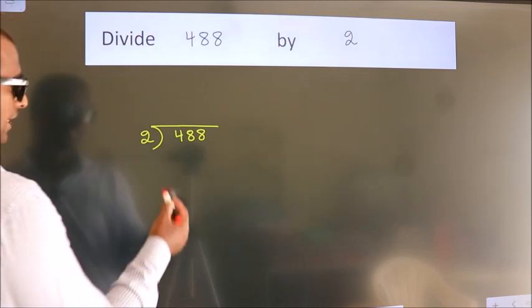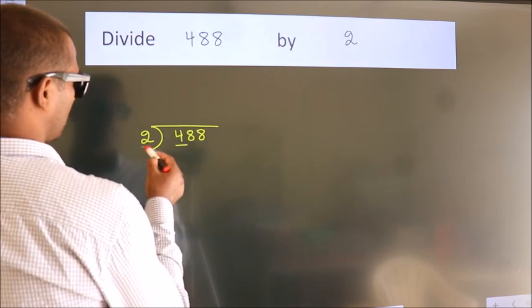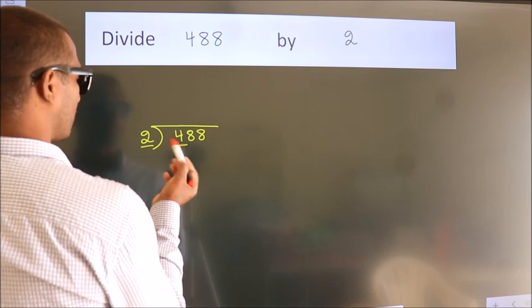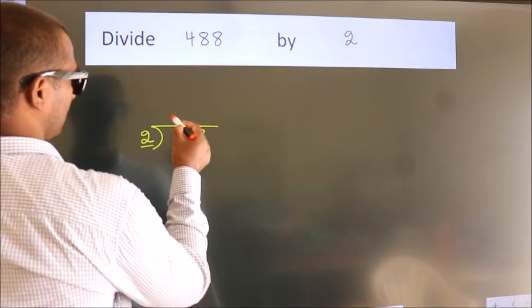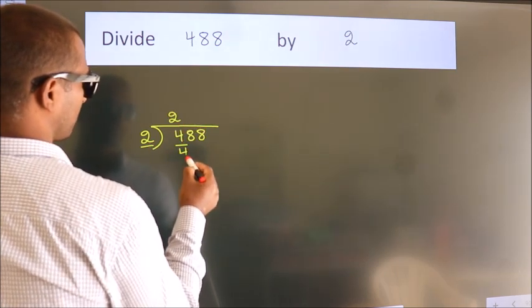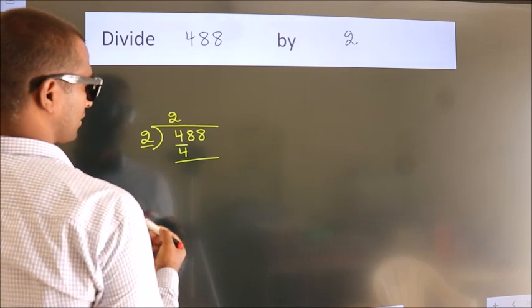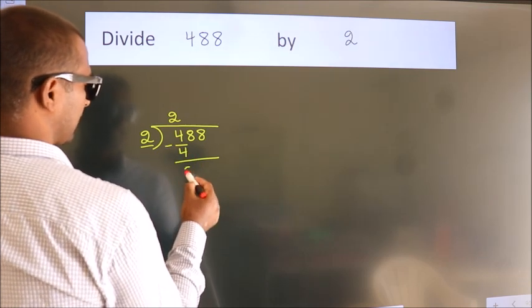Next. Here we have 4, here 2. When do we get 4? In 2 table. 2 2's, 4. Now, we should subtract. We get 0.